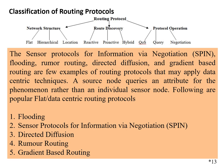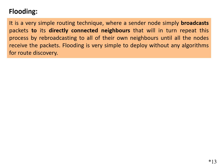Starting with flooding — the idea is very simple. A node sends data by broadcasting to all its neighbors, and those neighbor nodes broadcast to their own neighbor nodes, and so on — it floods everywhere. It is a very simple routing technique where a sender node simply broadcasts packets to all directly connected neighbors, which in turn repeat the process until all nodes receive the packet. It is very simple, but it has some drawbacks.